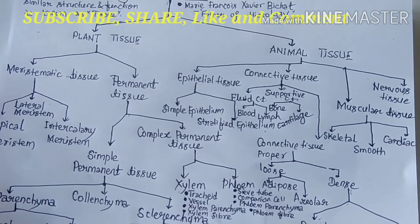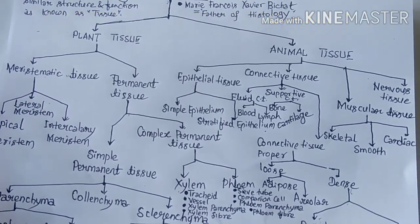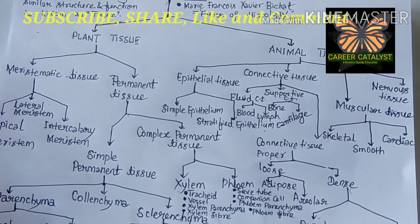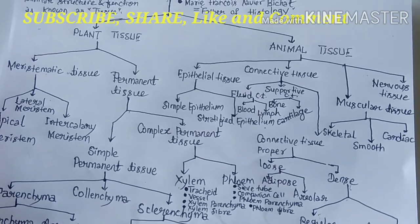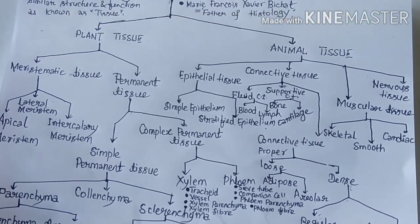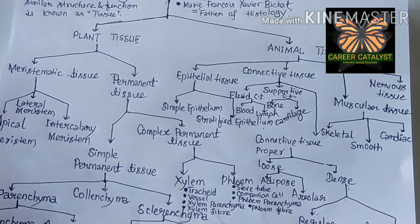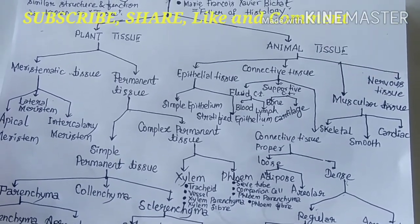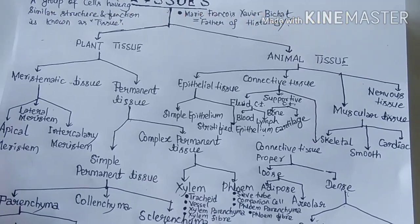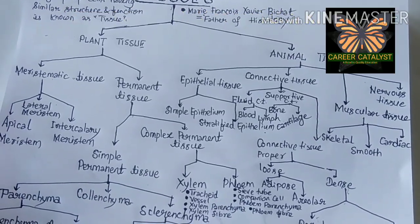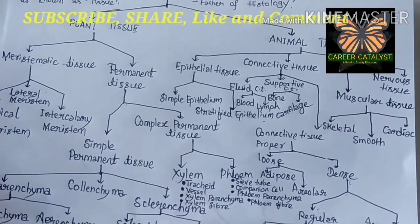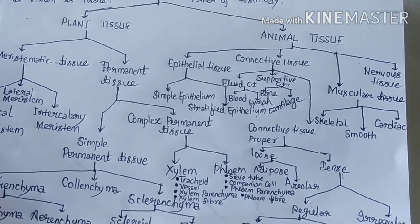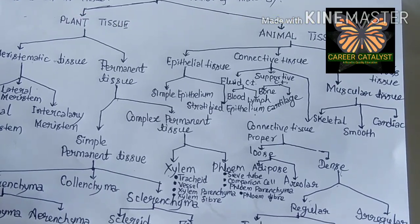Blood is a fluid connective tissue which is composed of plasma and corpuscles. Corpuscles means blood cells. There are three kinds of blood cells floating within the plasma: erythrocytes (RBC – red blood cells), leukocytes (WBC – white blood cells), and thrombocytes (platelets).